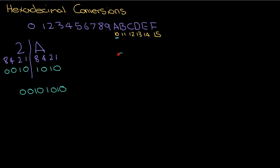Now let's go the other way — binary to hexadecimal. I'm taking this nibble at a time; if you remember, it's four bits for a nibble. I divide the binary number into nibbles — four bits at a time — putting a line down for each nibble. Same trick: I write 1, 2, 4, and 8 underneath each nibble, starting at 1 and doubling all the way up to 8.